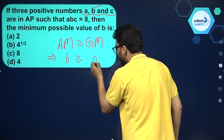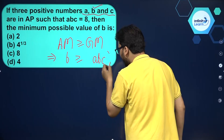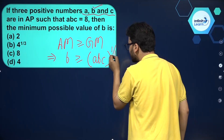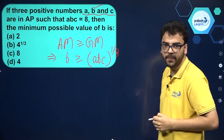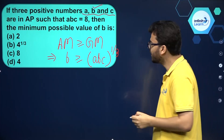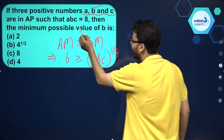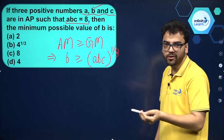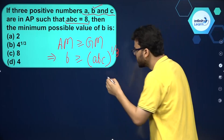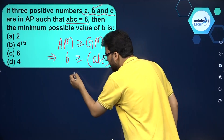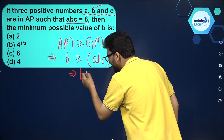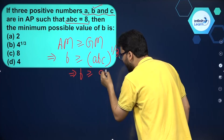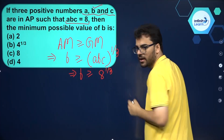The geometric mean will be the product of these numbers raised to the power 1 by 3, because there are three numbers. It is given in the question that A times B times C is equal to 8, so we can say that B is greater than or equal to 8 raised to the power 1 by 3.